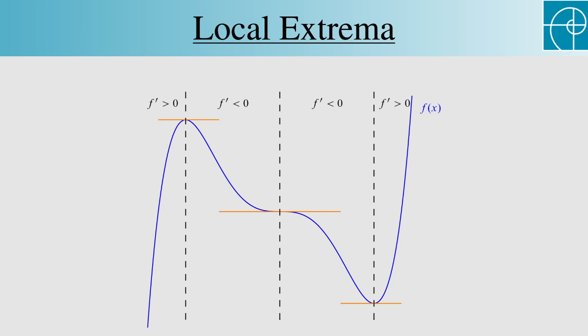The local maximum occurs where f' changes from positive to negative, and the local minimum occurs where f' changes from negative to positive. At the middle point, where there's a horizontal tangent line but no local extremum, the derivative doesn't change sign. This is how we know that we have a local extremum.